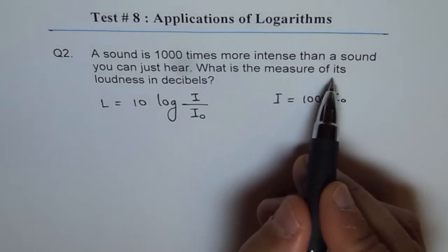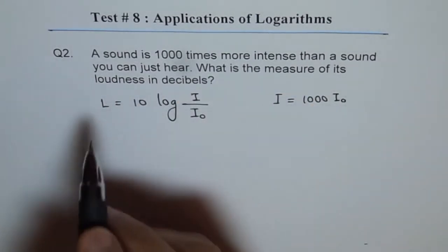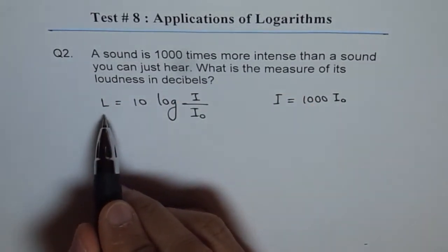What is the measure of its loudness in decibels? L is the loudness in decibels. That is what we need to find.